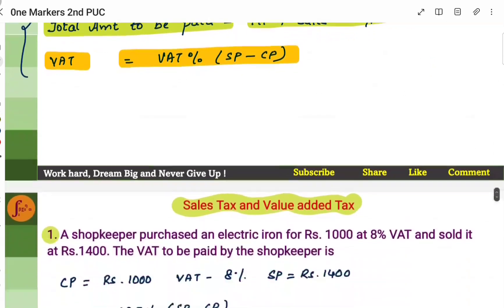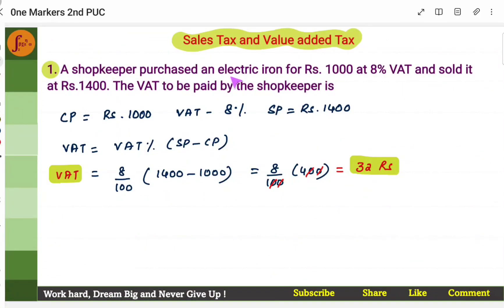Now let's look at the problems. A shopkeeper purchased an electric iron for Rs. 1000 at 8% VAT and sold it for Rs. 1400. So a shopkeeper has bought an electric iron for Rs. 1000 and the VAT percentage is 8%. Now after he buys it, he sells it to his customer at Rs. 1400. Now what should be the VAT that the shopkeeper needs to pay? This is the normal day-to-day scenario. A shopkeeper buys the products from somewhere and then sells it to the customer, and then he needs to pay VAT.